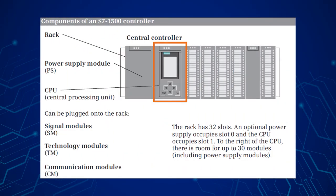The CPU contains the operating system and the user program. The user program is saved power-fail-proof on the Somatic memory card, which is inserted in the CPU. The user program is executed in the CPU's work memory. The bus interfaces present on the CPU establish the connection to other programmable controllers.